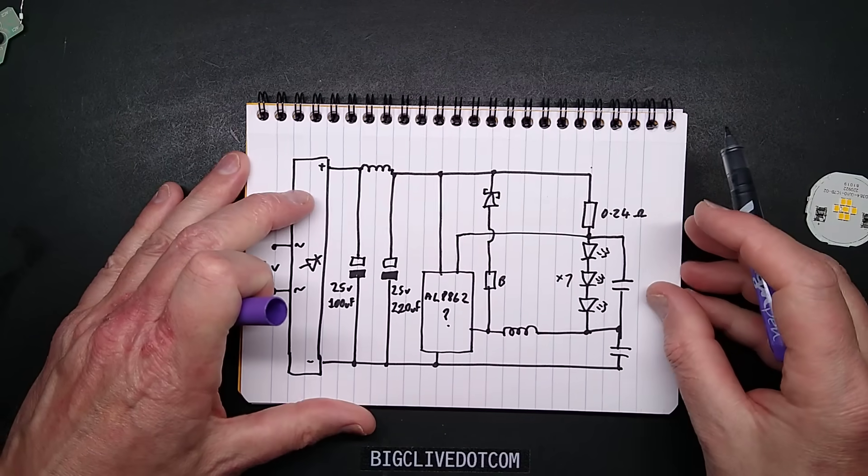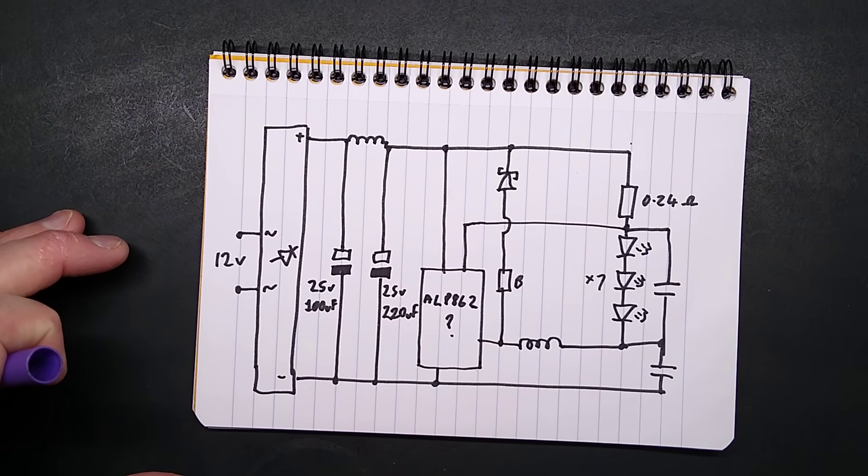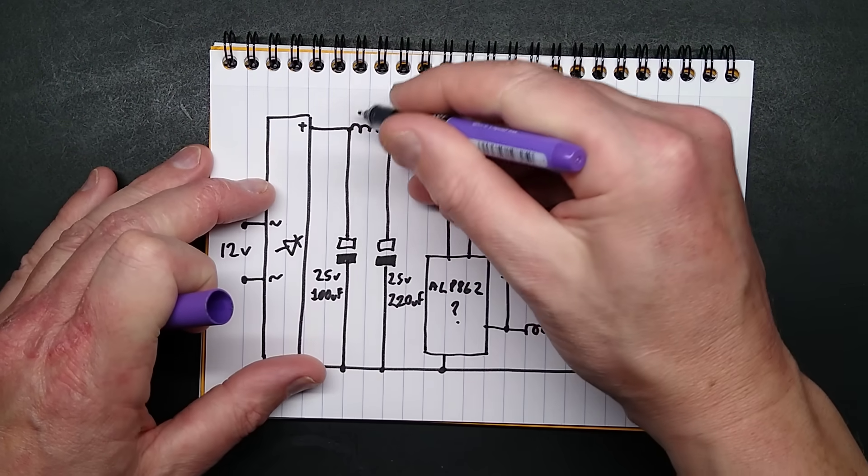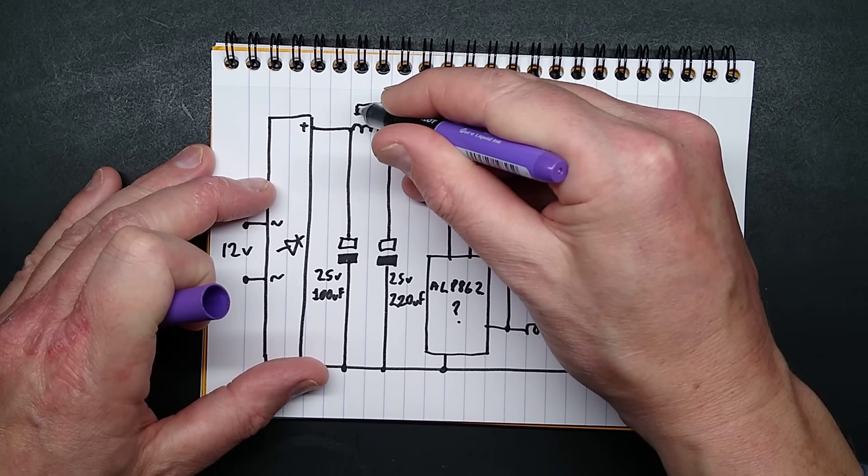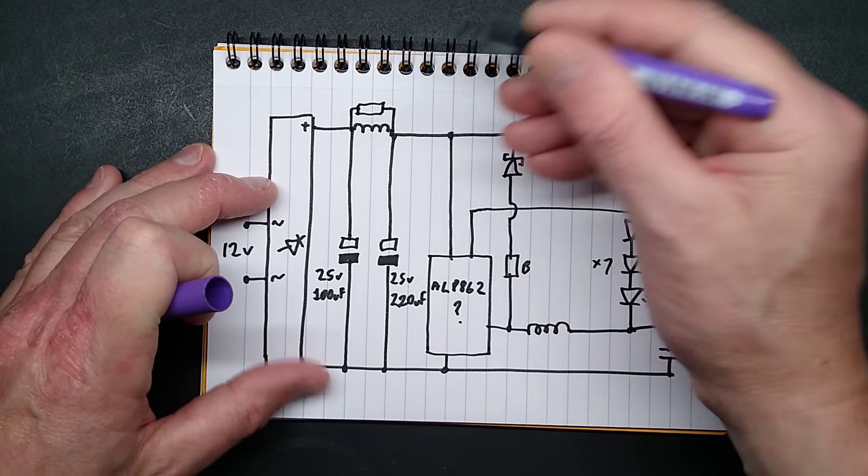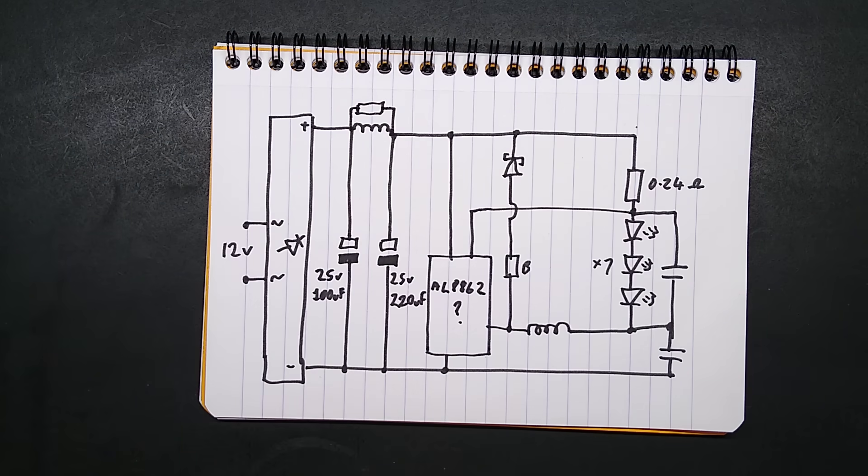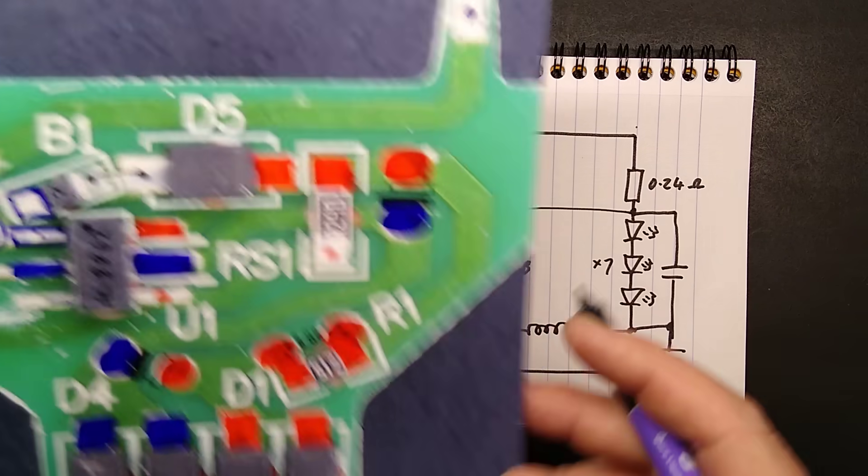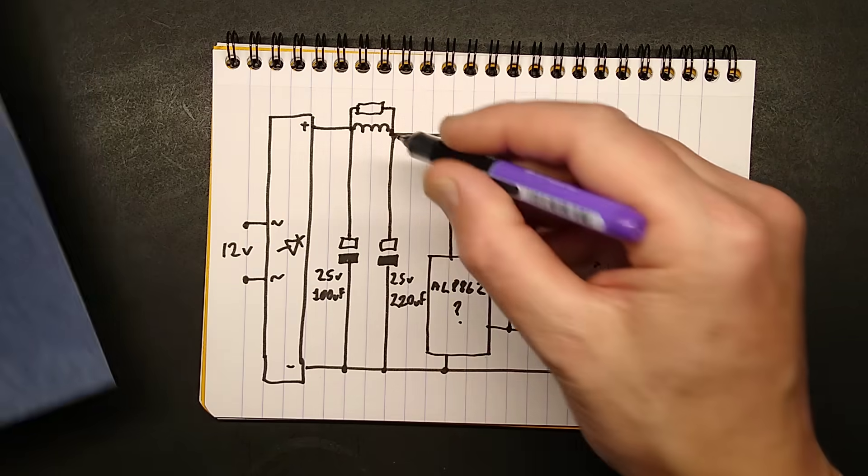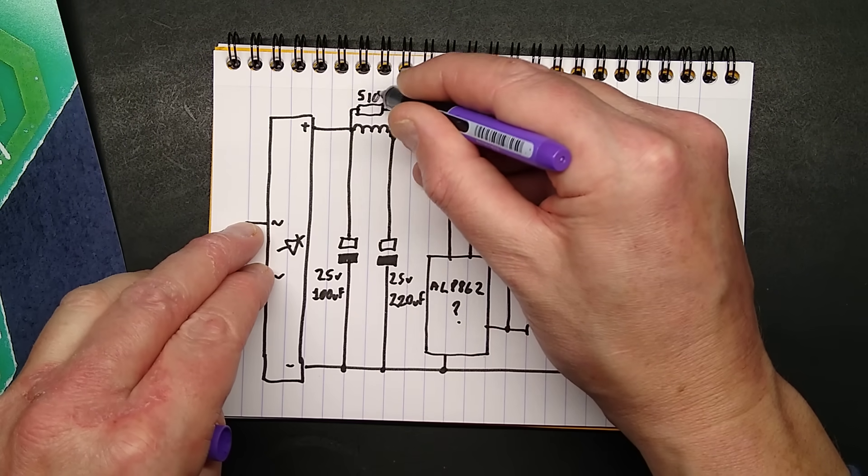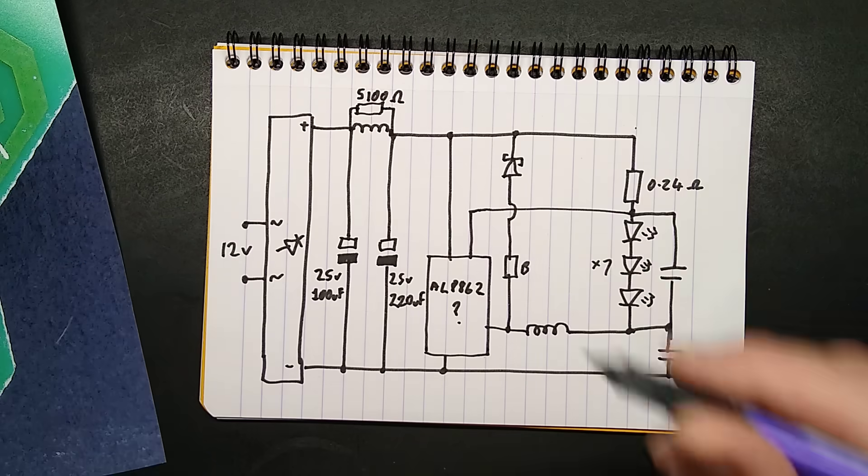Let's add that missing component that I've just spotted across the inductor. It's a resistor and it is just basically across the inductor there. What value was that? The value of that was 512, 5100 ohms, 5.1k.